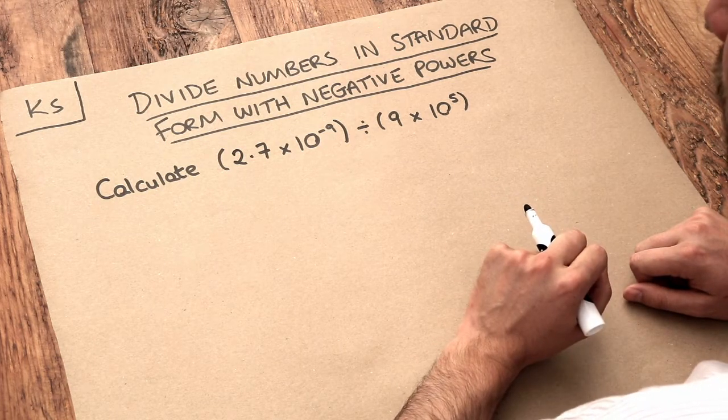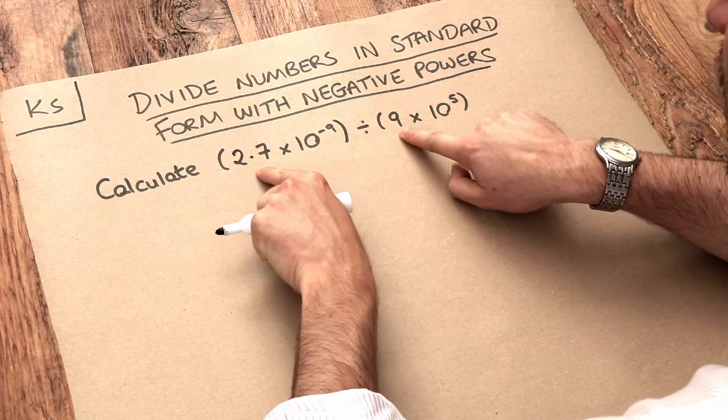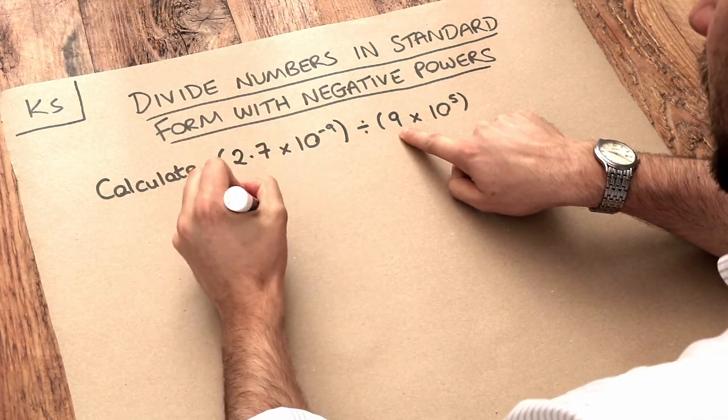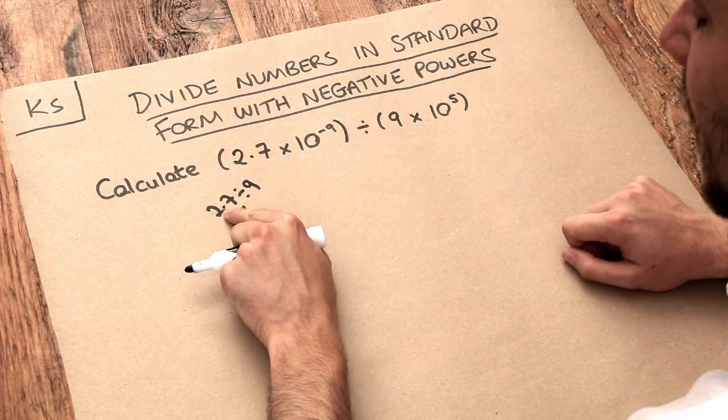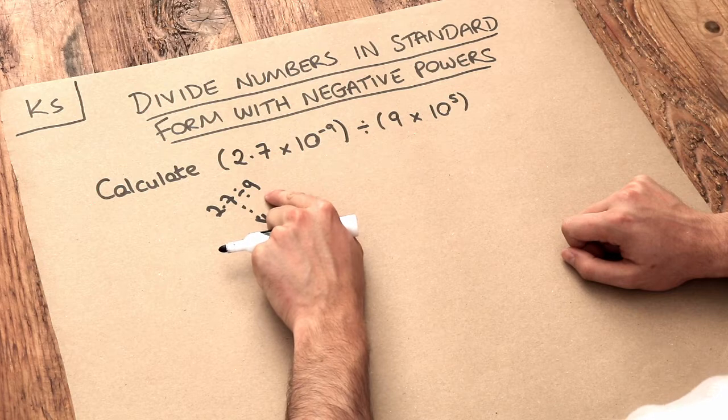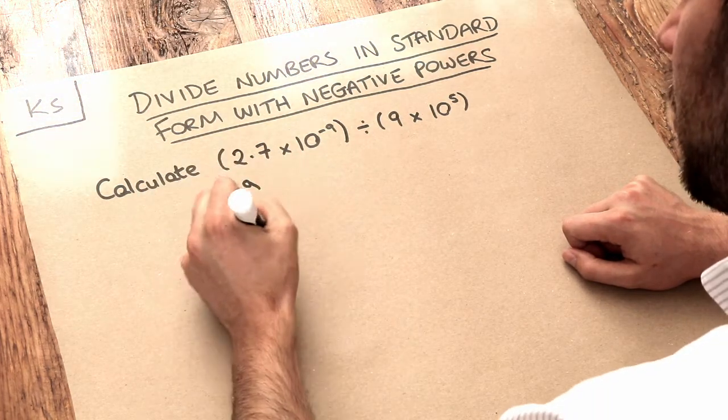So let's do the same thing as we did in the previous video. We first divide the numbers in front of these powers of 10, so we do the 2.7 divided by the 9. Now if you think about it, 27 divided by 9 is equal to 3, and therefore 2.7 divided by 9 is going to be 0.3.